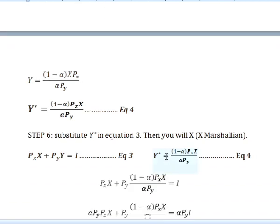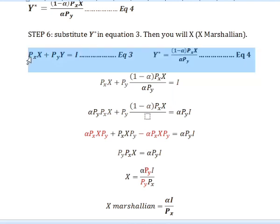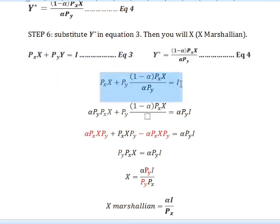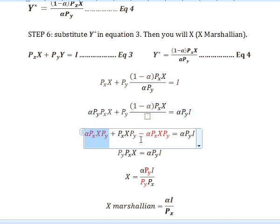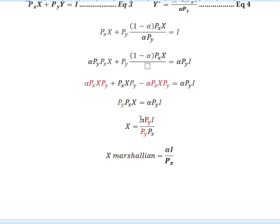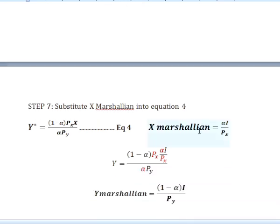The next step, we substitute temporary y (equation 4) into equation 3. We rewrite the consumer budget constraint and substitute y using y-star. We then multiply through by the denominator, simplify (the highlighted terms cancel to zero), and make x the subject. We get x-star.